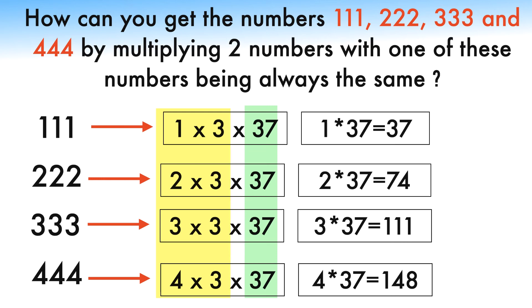But there is one more. 3 is also common to all 4. Now, you need a second number. That is 1 times 37 equals 37, 2 times 37 equals 74, 3 times 37 equals 111, 4 times 37 equals 148.